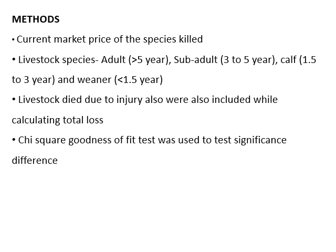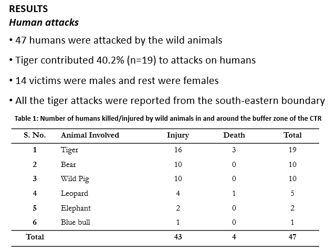A total of 47 humans were attacked by wild animals during the study period. Tiger contributed the most — 40.2% of total attacks on humans — with 19 humans attacked by tiger, of which 14 were males and the rest females. This table provides the number of humans attacked by different wild animals in Corbett Tiger Reserve.